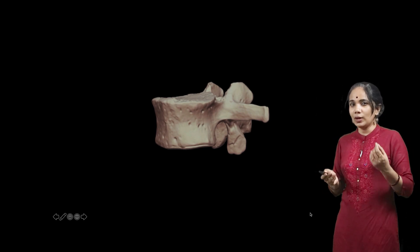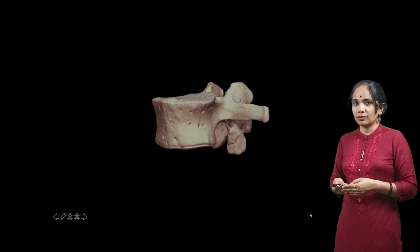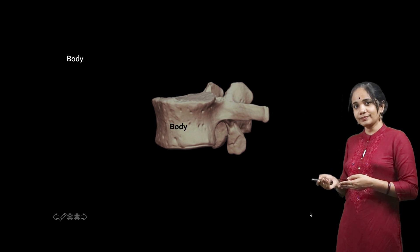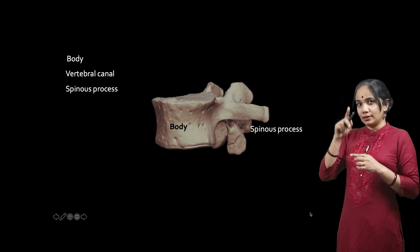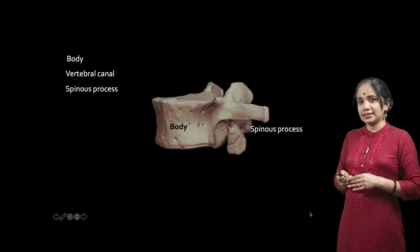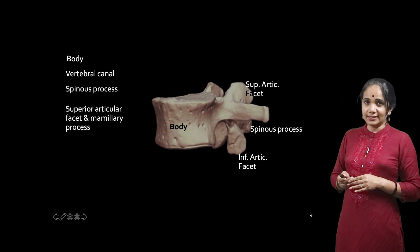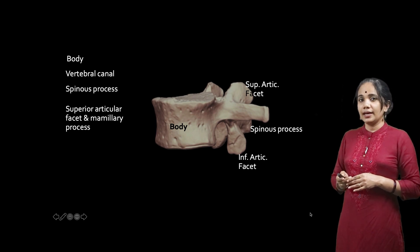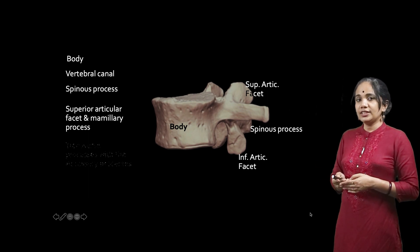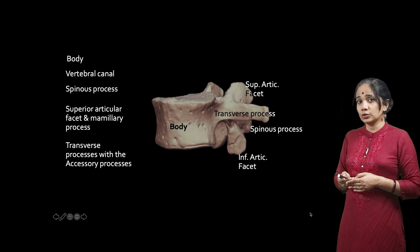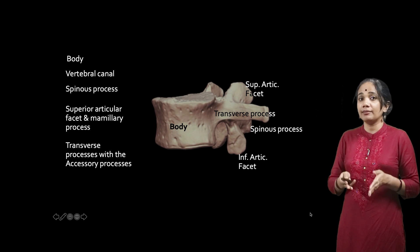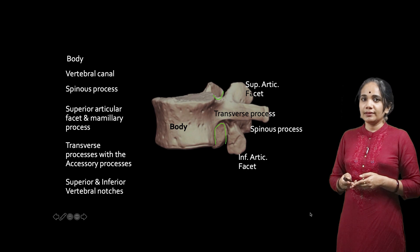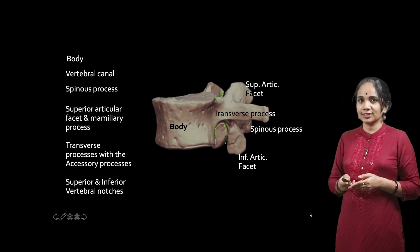Let us classify one last time the external features of the lumbar vertebra: the body, the quadrangular spinous process, the superior articular facets directed medially and the inferior articular facets directed outwards and laterally, the transverse process with the accessory process on it, and the mammillary process on the superior articular facet. These two processes — the mammillary and the accessory — are seen only in the lumbar vertebra. And we have the superior and inferior vertebral notches.